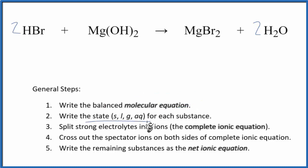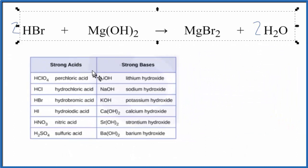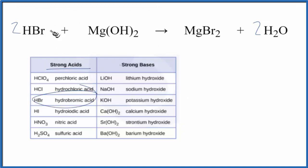Now we need to write the states for each substance. This chart here is a good one to memorize. It's the common strong acids and bases. So if we're looking down strong acids, HBr right here, that's the strong acids. So it's going to dissociate into its ions. We're going to write Aq. It's a strong electrolyte.